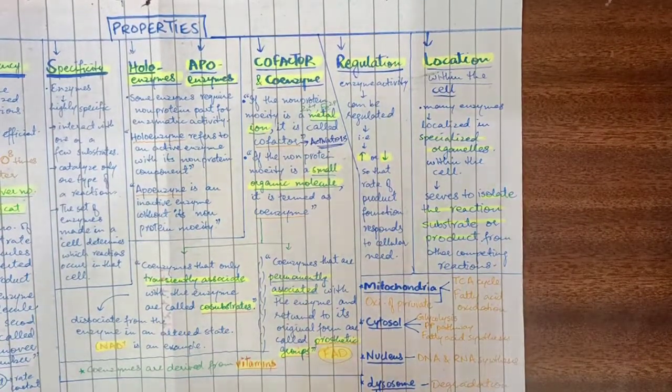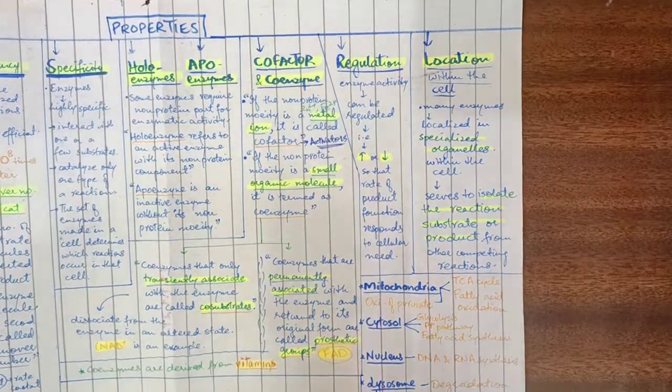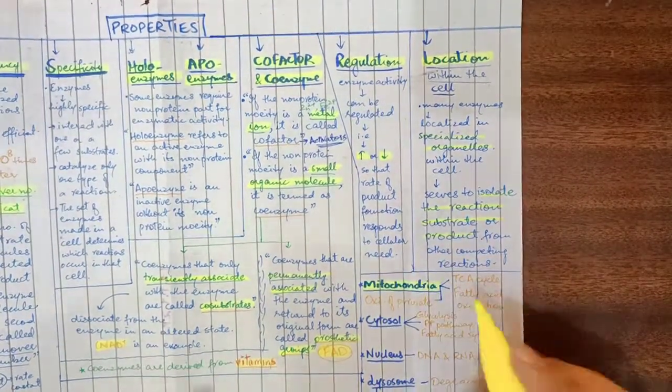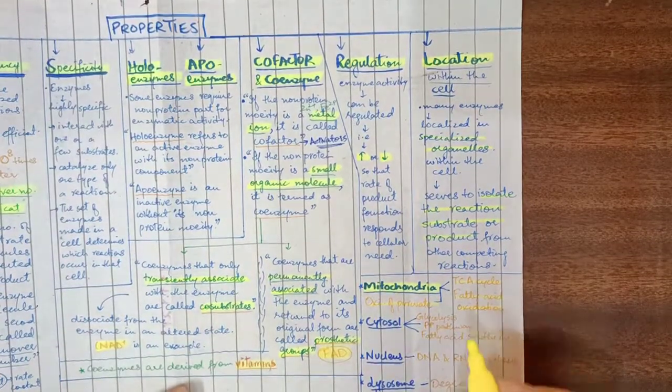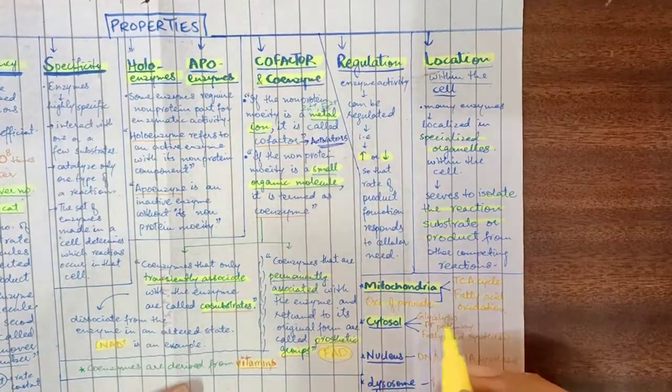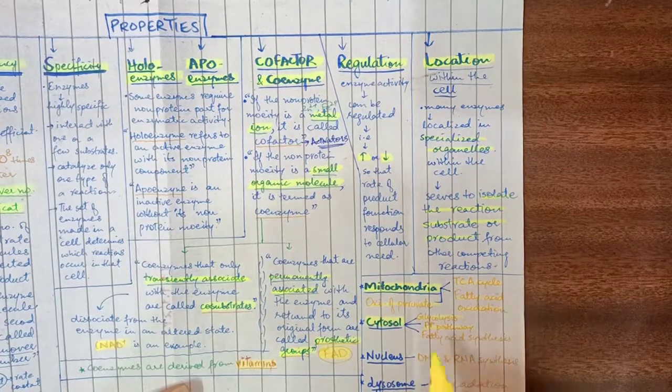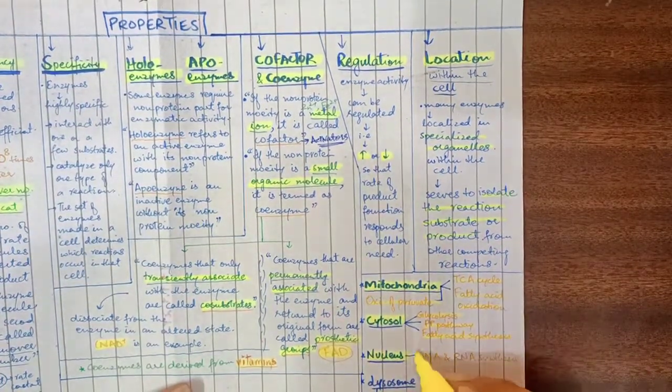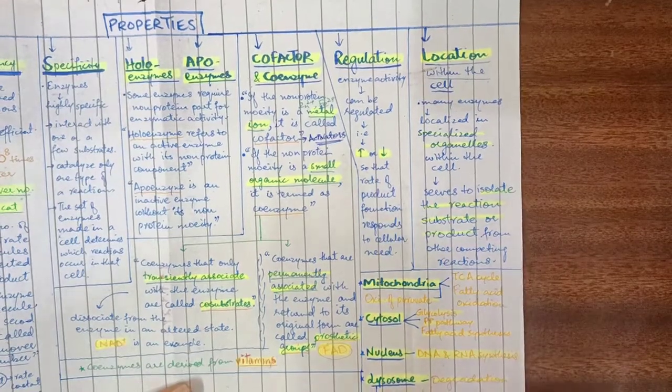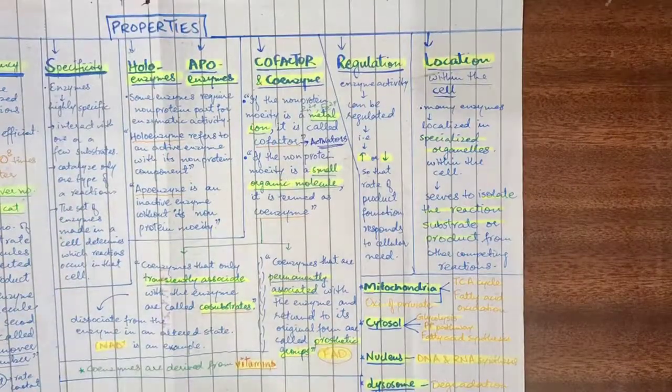In mitochondria, we have the TCA cycle, fatty acid oxidation, and pyruvate oxidation. In the cytosol, we have glycolysis, the pentose phosphate pathway, and fatty acid synthesis. In the nucleus, we have DNA and RNA synthesis. In lysosomes, we have degradation of complex macromolecules.